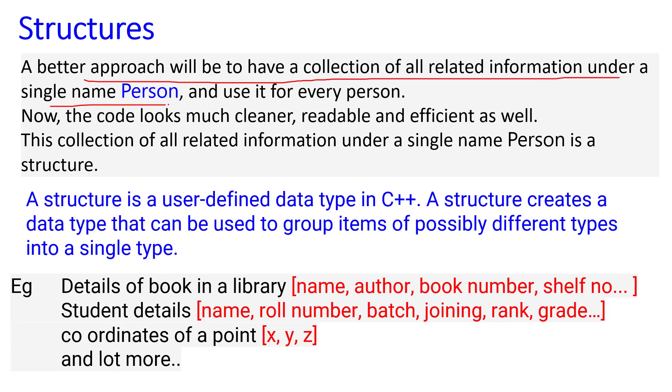A better approach will be to have a collection of all related information under a single name, like Person. Structure the data class and use it for every person so that different persons' information can be clubbed in a structured way. Then the code looks much cleaner, readable, and efficient. This collection of all related information under a single name is called a structure.